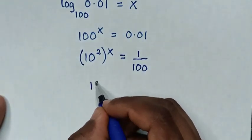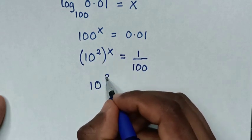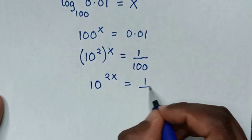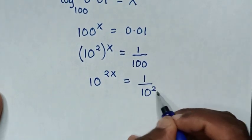Then it will be 10 power of 2 times x is power of 2x is equal to 1 over 100 is same as 10 square.